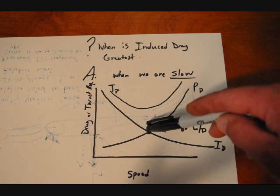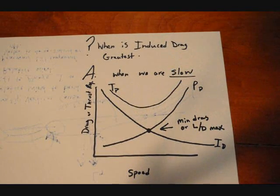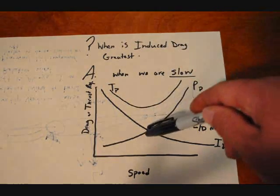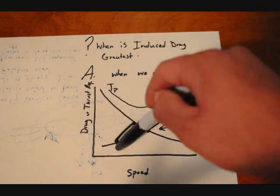And just to point out right here, this is L/D max, that's our minimum drag airspeed. So this is the drag curve L/D max, but it's drawn basically just to show you that induced drag is highest when we are slow.